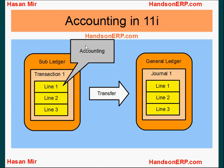Let's talk about what would happen in previous releases of Oracle applications like Release 11i. You will create a transaction in a subledger and transfer it directly to the general ledger module. The transaction and its distribution that you could see through the subledger module is what you would call accounting.